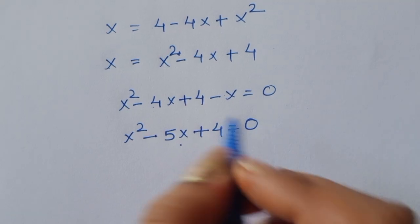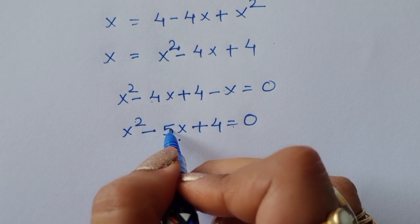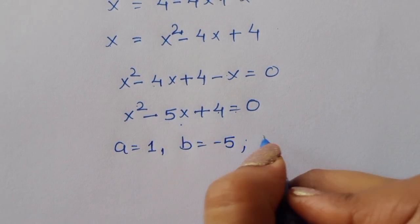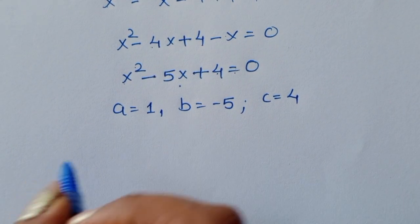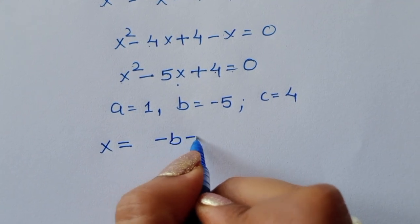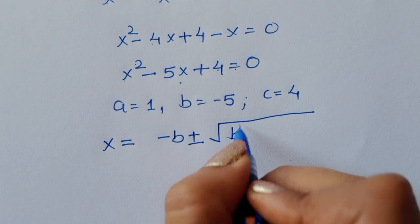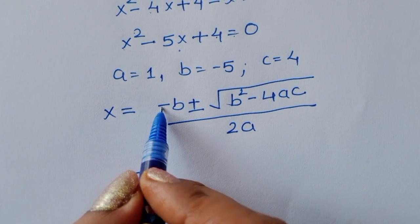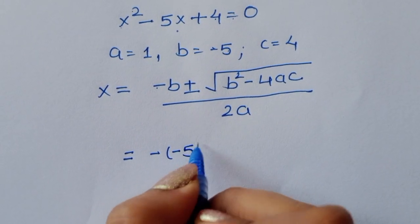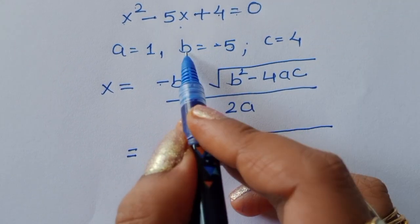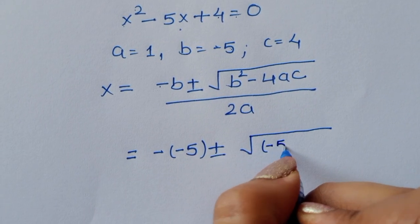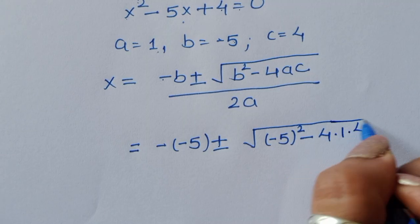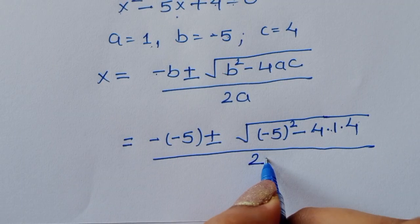We have the equation x² - 5x + 4 = 0, where a = 1, b = -5, and c = 4. Using the quadratic formula: x = (-b ± √(b² - 4ac)) / (2a), substituting gives x = (5 ± √(25 - 4×1×4)) / 2.